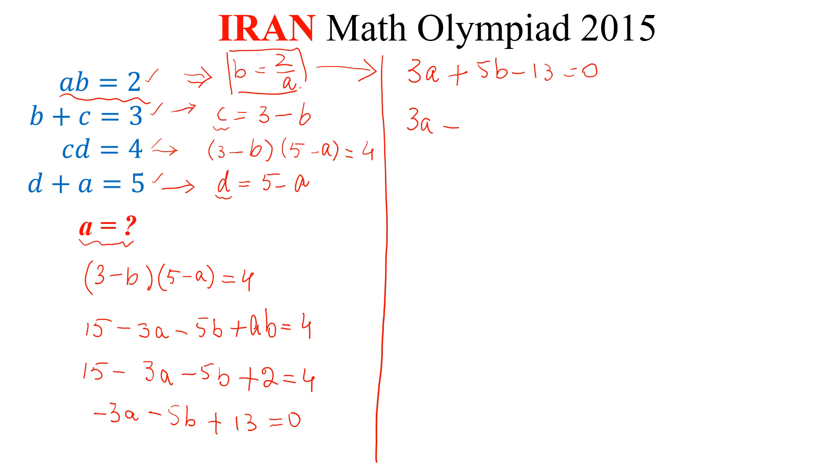We can put this value in this equation. So, 3A plus 5 times 2 divided by A minus 13 equals 0. Multiplying both sides by A, we get 3A squared plus 10 minus 13A equals 0. Rearranging it, 3A squared minus 13A plus 10 equals 0.